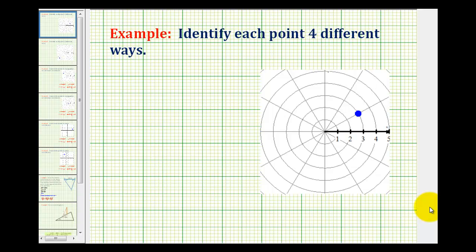In this example, we want to determine four possible ordered pairs in polar coordinates for the given point.